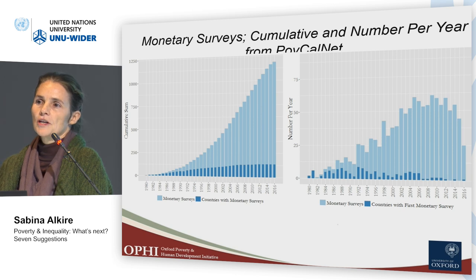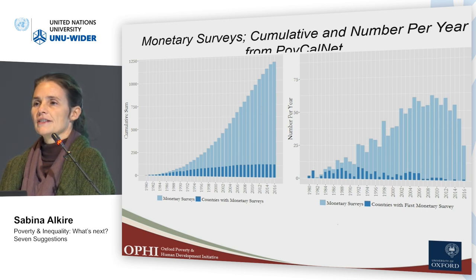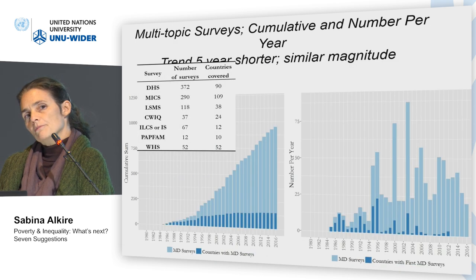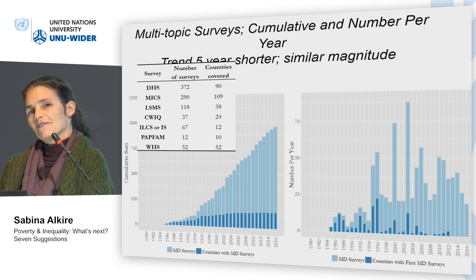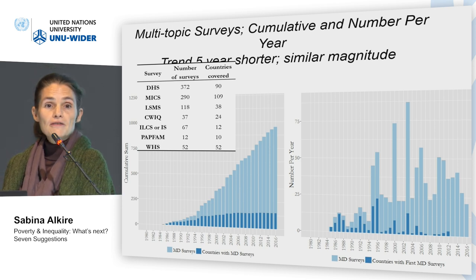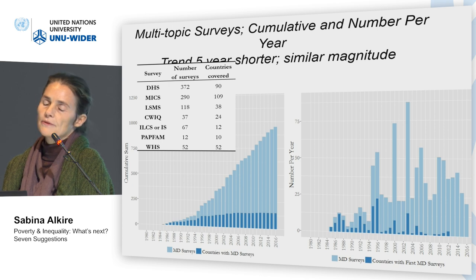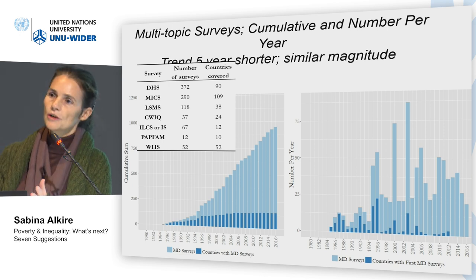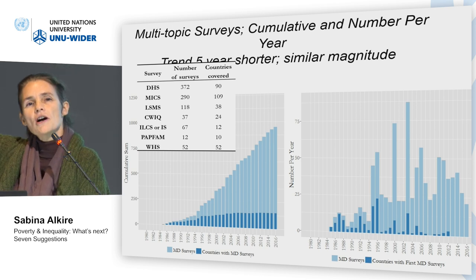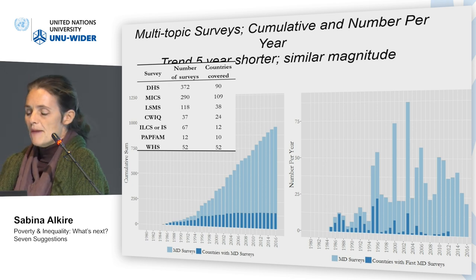If you look at POVCalNet, surveys from 1980 to 2016 number 1,189 — then we have a base. Part of the problem with multidimensional or multi-topic surveys is that there is no POVCalNet equivalent. You have to individually count and define; this work is not yet done. There are roughly 980-some surveys, with 68 more coming through this year. Multi-topic surveys start being counted from 1985, so there's a much bigger mass of microdata.